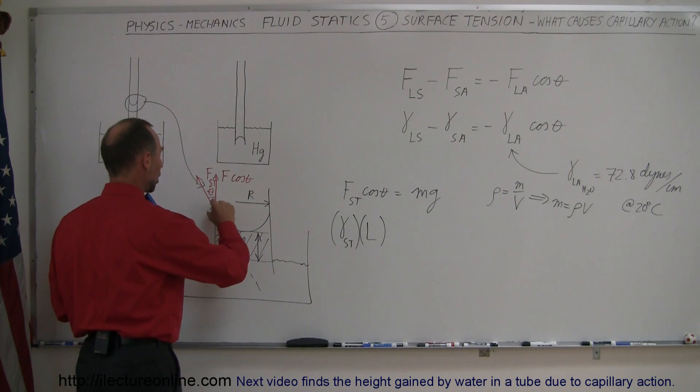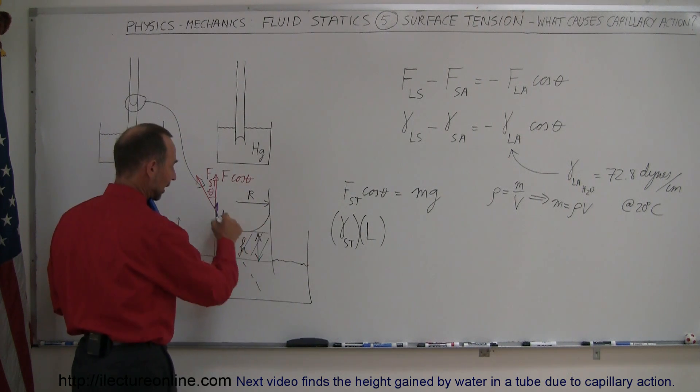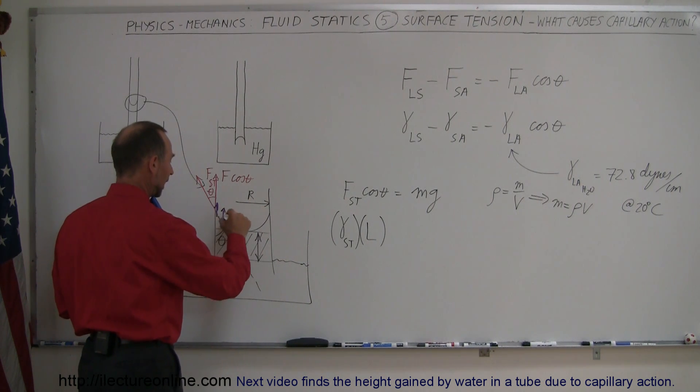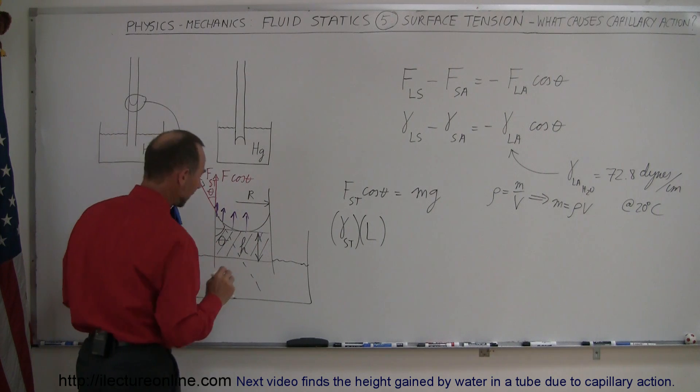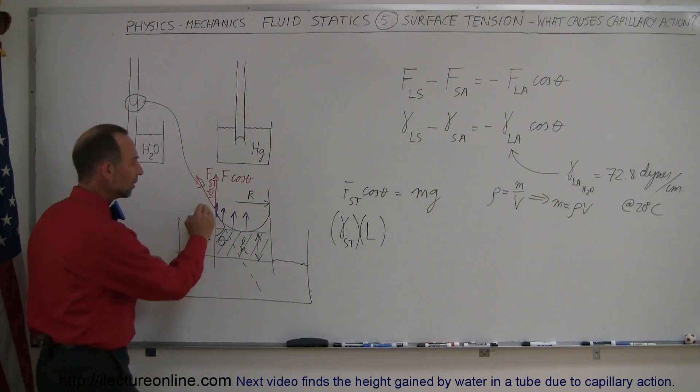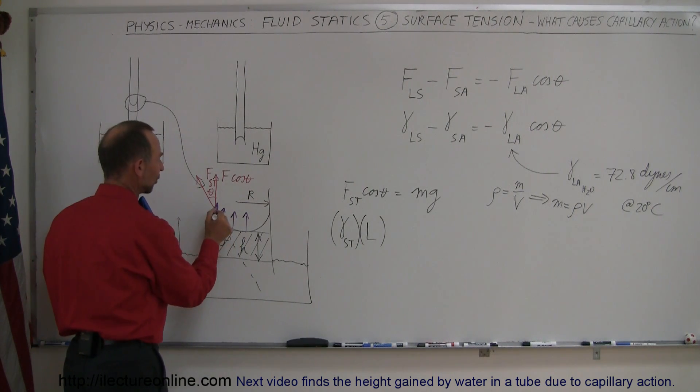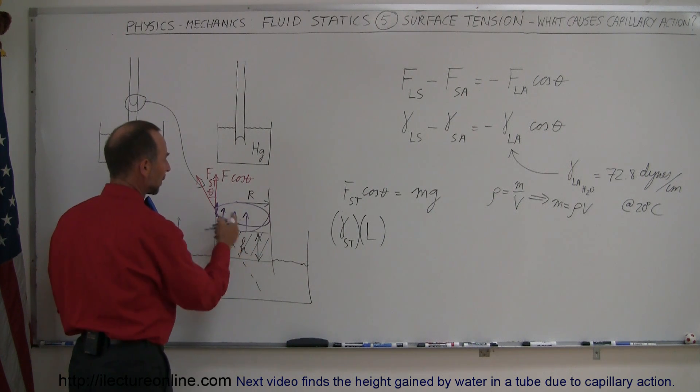that would be all along the edge of the glass. So if you can imagine that this would be going all the way around the glass, now I'm kind of maybe confusing a little bit. This was supposed to be the meniscus, but you can also think of the water at the top along the edge.